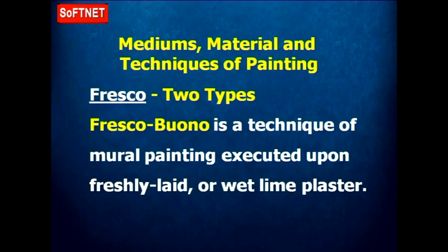Let us look at the mediums, materials, and techniques of paintings — how many ways paintings are done. One of the early techniques is fresco. Fresco is one of the early painting techniques, and within fresco you have two types: fresco buono and fresco seco. These two terms are Italian terms, but used extensively throughout the world.